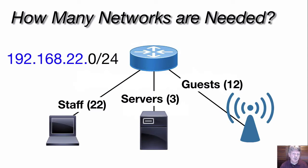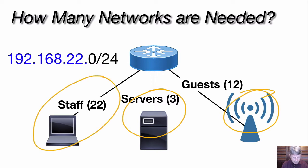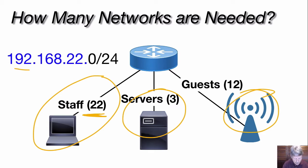Our first step is to determine what is the maximum number of networks that we need, and what's the largest network — in other words, what's the maximum number of hosts on any one of the networks? In our example, we have a branch office. We're going to break it up into three networks: a Wi-Fi network for guest access, a network with our in-house resources and servers, and another network with our staff workstations. Three networks in total, and the largest one is going to have to handle 22 hosts. Our assigned network is what we're going to start working with.